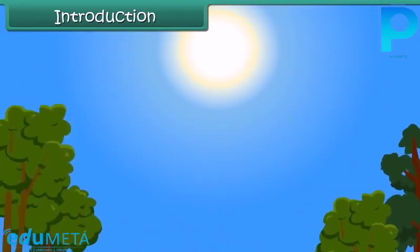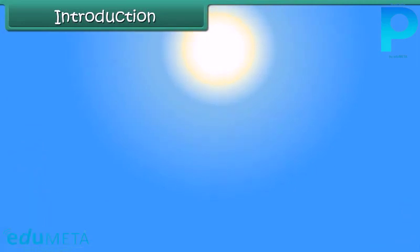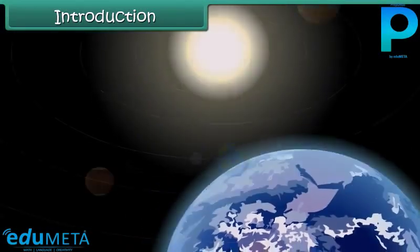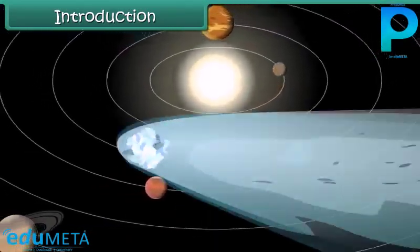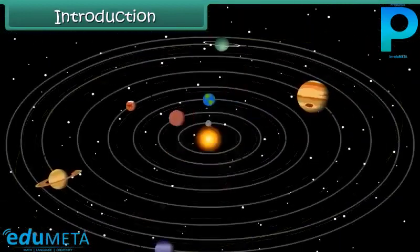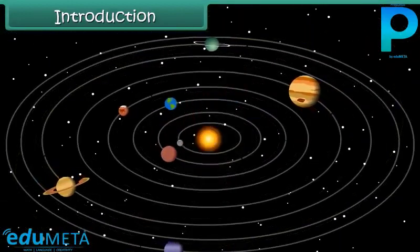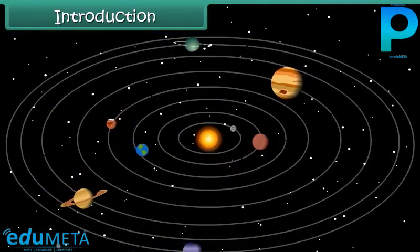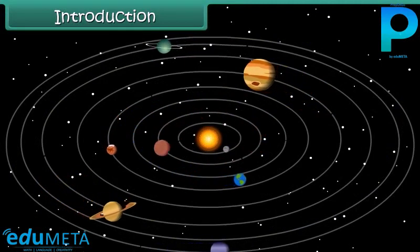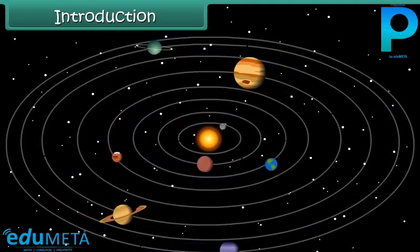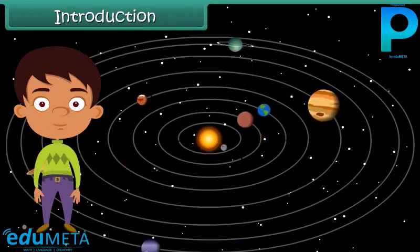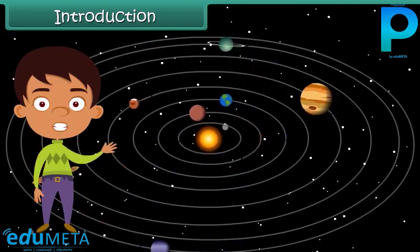The solar system is the Sun and the group of planets and bodies that orbit it. The Sun is the center of our solar system. Planets and other bodies like comets and asteroids orbit or go around the Sun. In this lesson let us learn more about the solar system.